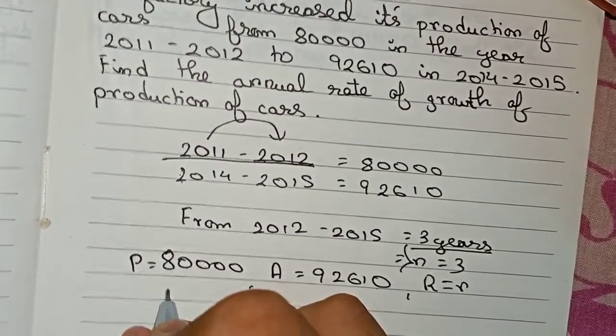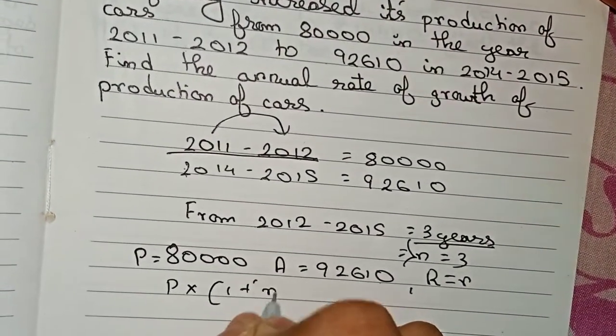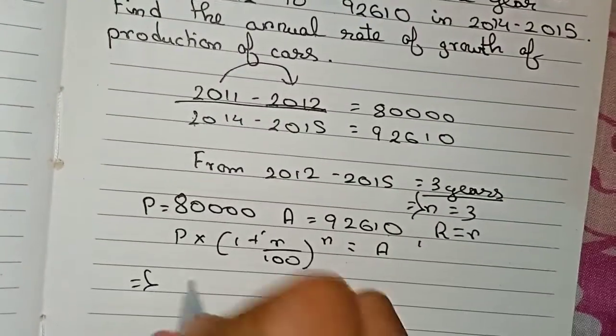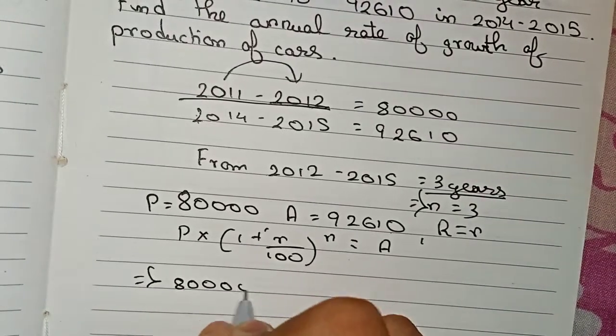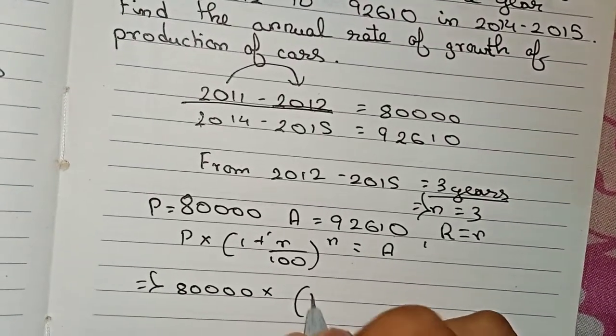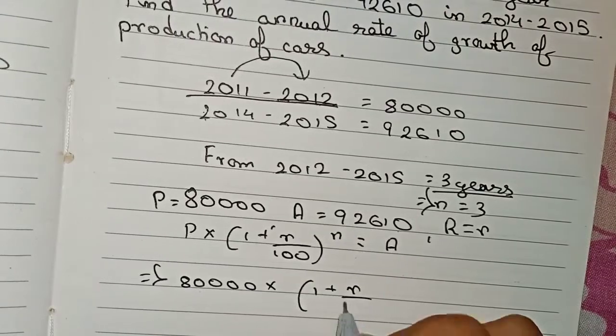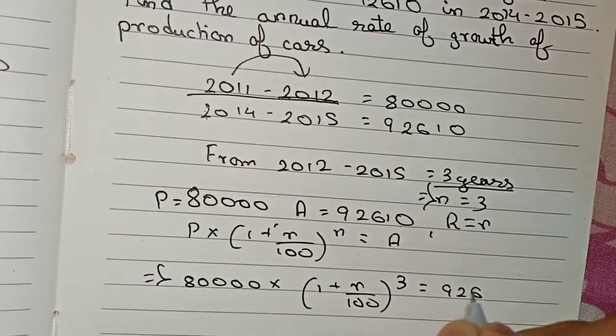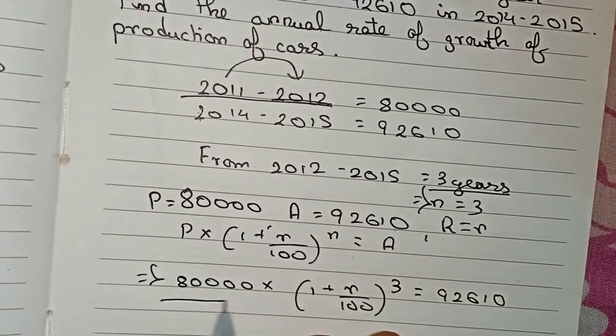We know that our principal times (1 + r/100) to the power n equals amount. So now I put down the values. Principal is 80,000 times (1 + r/100) to the power 3 equals the amount, that is 92,610.